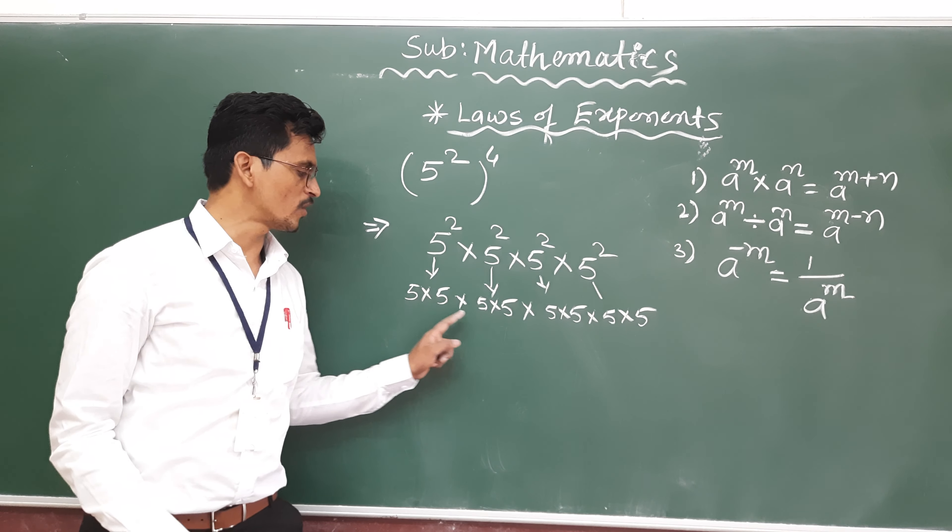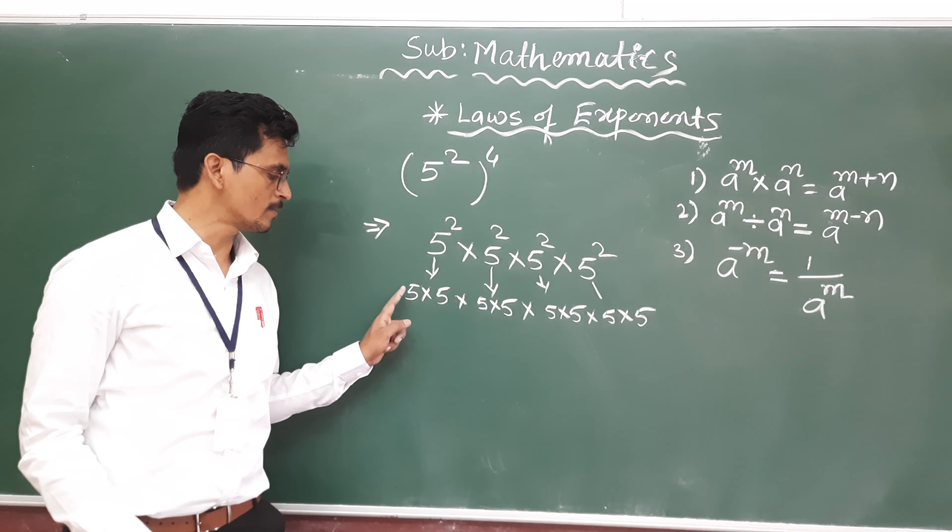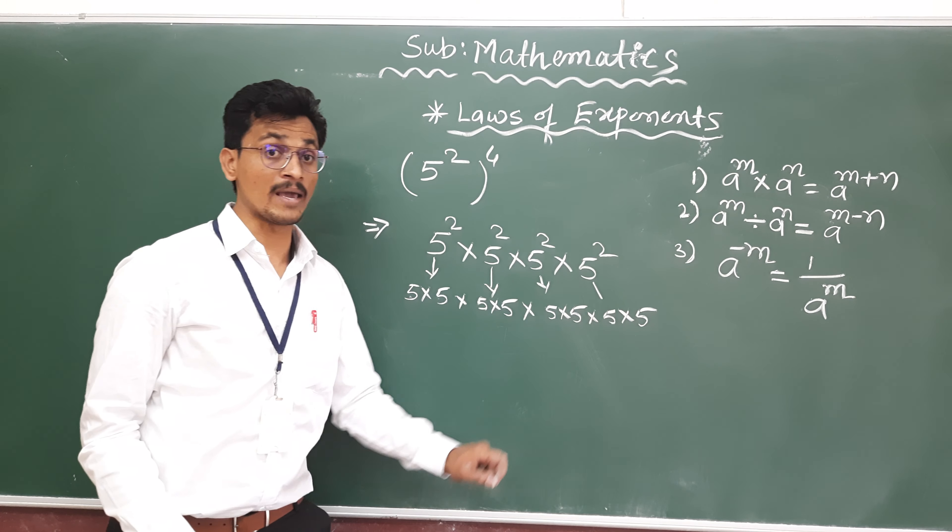Now, as we will observe, 5, 5, all are same numbers only. And these are in multiplication. How many times multiplication? 1, 2, 3, 4, 5, 6, 7, 8 times.